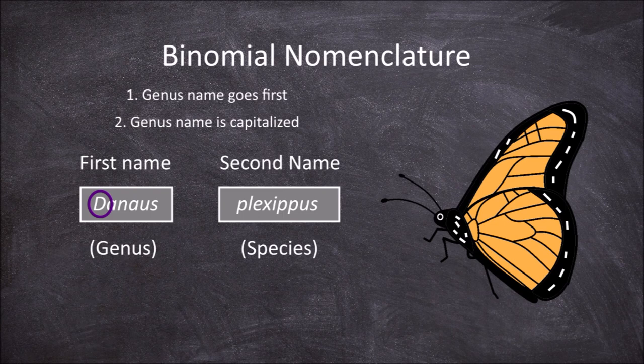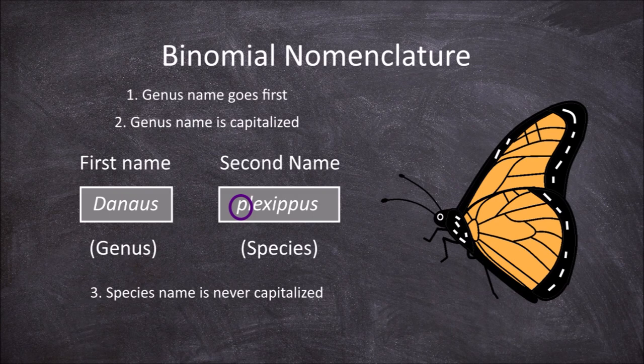The third rule is that the species name is never capitalised. In our example, the species name Plexippus is not capitalised — the species name is always going to start with a lowercase letter.